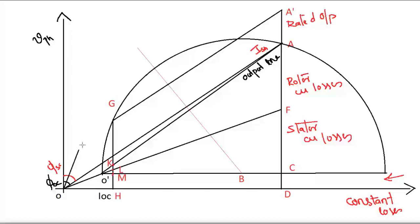From O, draw a line up to G — this is the current drawn by the motor at rated load, and this will be the operating power factor. O'F is called the torque line. With this, the drawing of the circle diagram is almost complete. You can now determine values such as maximum output, maximum torque, maximum input, and maximum power factor using the circle diagram.